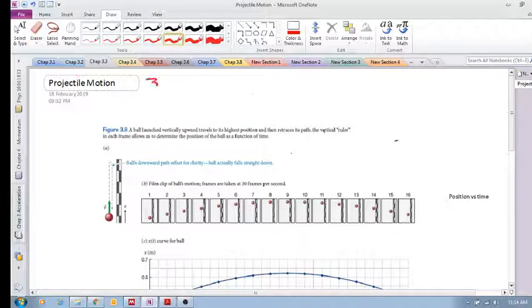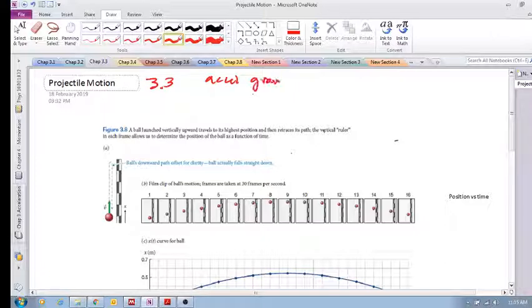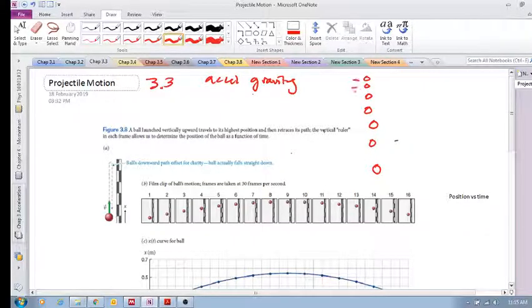Okay, 3.3 projectile motion. In 3.2 we saw acceleration due to gravity - we dropped a ball and every time step we saw that the displacement between... I know it's not moving, use your imagination. We saw that for every time step the displacement got larger and larger and larger.